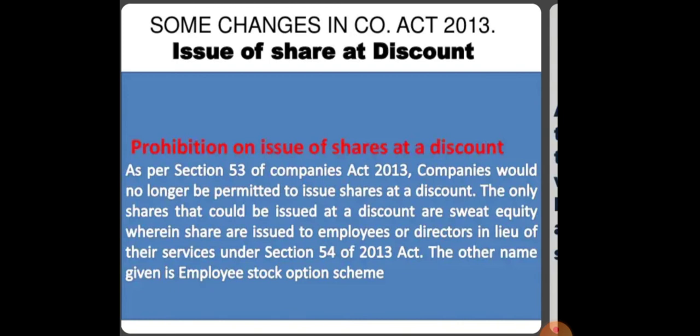Now, regarding issue of shares at discount — as per Section 53 of the Companies Act 2013, a company can no longer issue shares at discount. The only shares that can be issued at discount are sweat equity shares. Under Section 54 of the 2013 Act, a company can issue sweat equity shares to its employees or directors in lieu of their services — also known as the Employee Stock Option Scheme. These can never be issued to the general public.